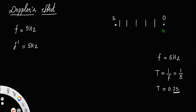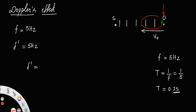Now, what happens if the observer moves toward the source with a velocity V_O? Suppose if he is at his original position, he can receive 5 waves clearly — 5 waves in 1 second. But he covered an additional distance, which means he gets the advantage of receiving 2 more waves. So his new frequency will be 5 plus 2, that is equal to 7 hertz.